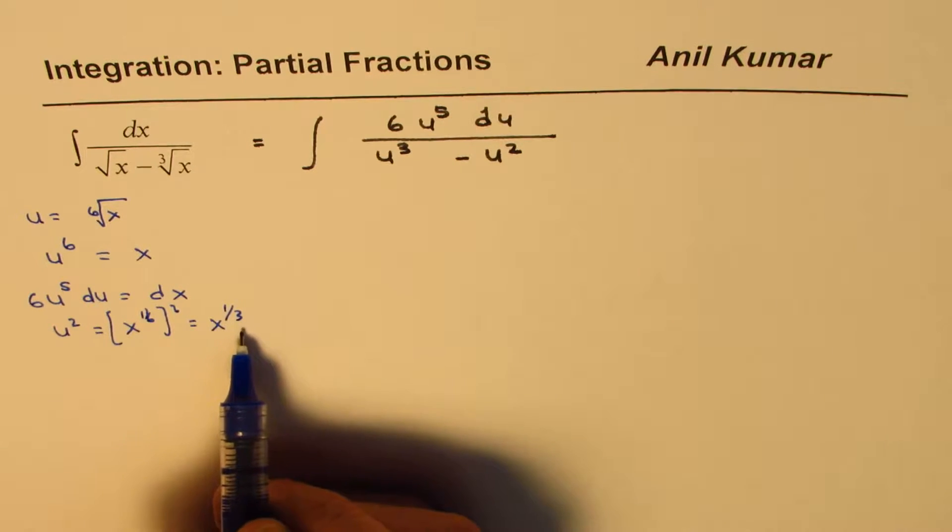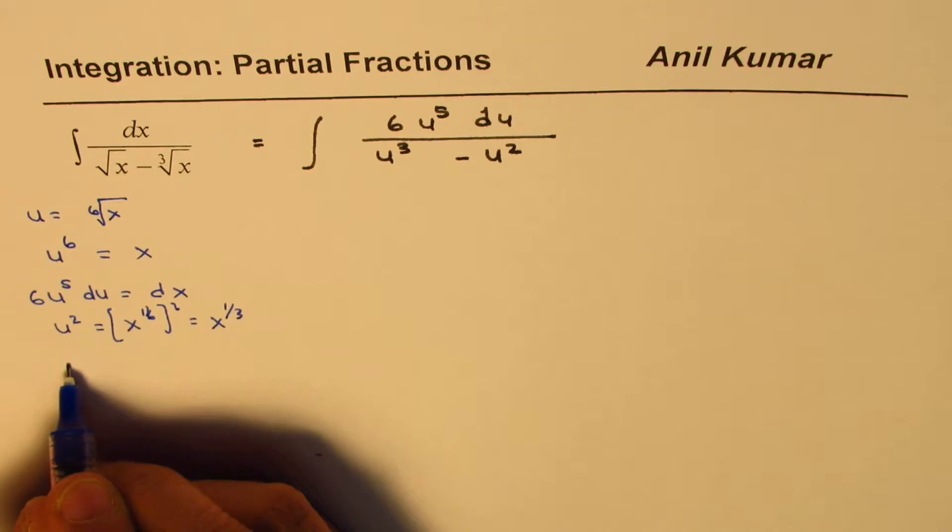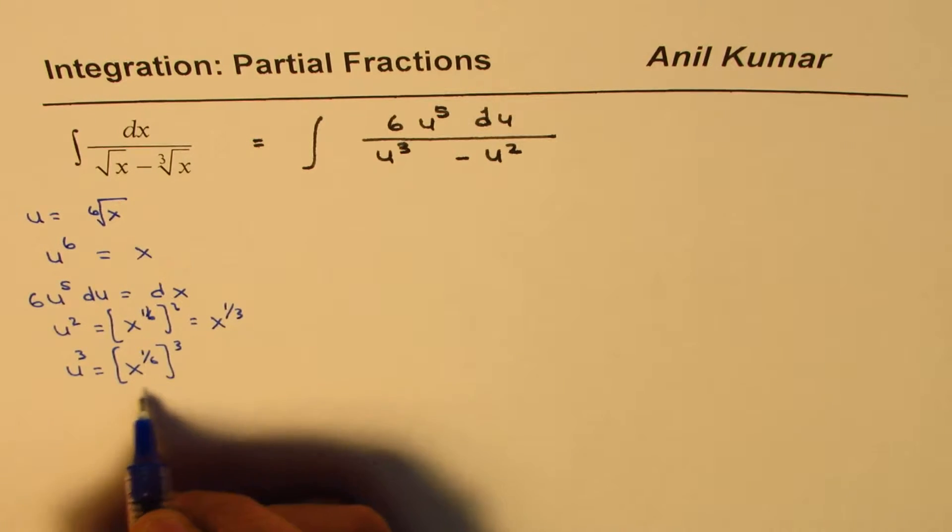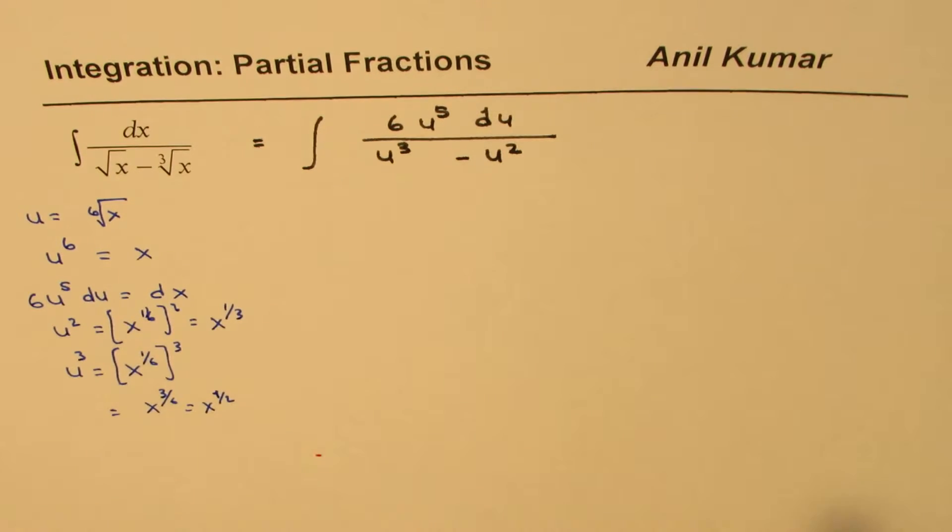And if I cube this one, so u equals to x to the power of 1 over 6. If I cube this one, then what we get here is x to the power of 3 over 6, which is x to the power of 1 over 2, right? Which is square root. So that is how you could do this substitution. So that's very critical substitution.